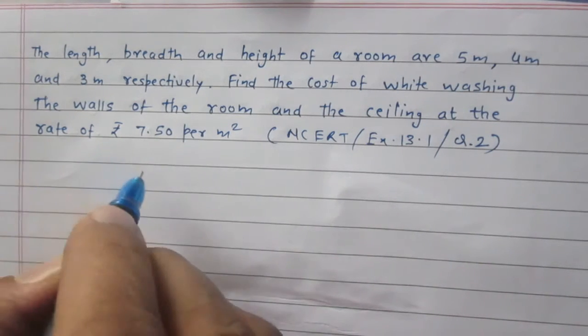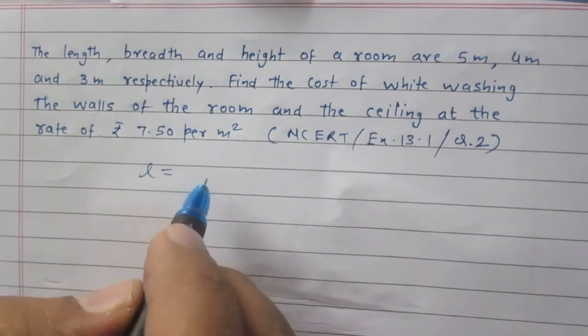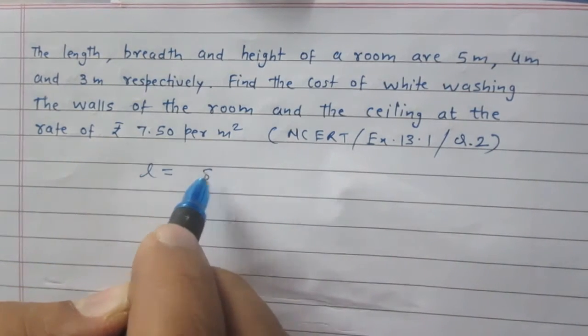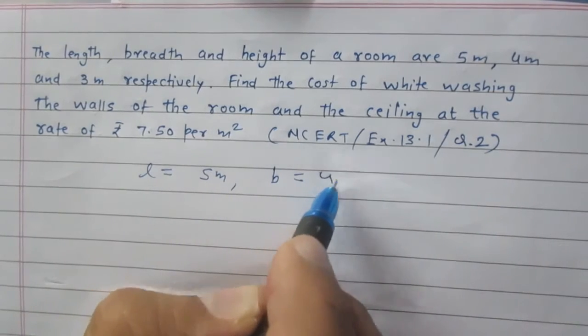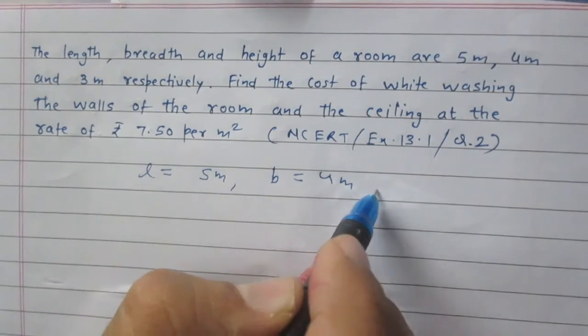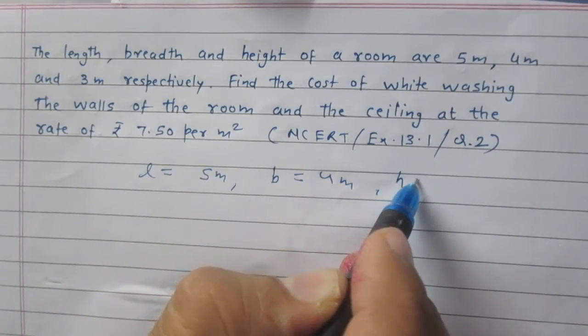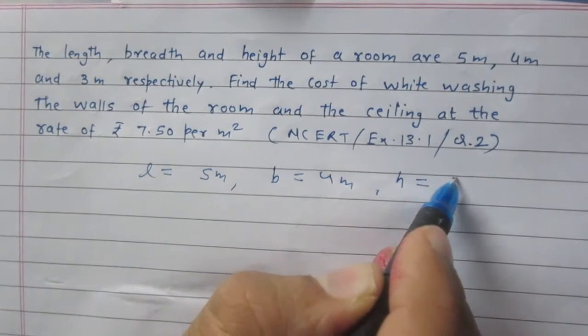Let us consider, L stands for the length of the room that is 5m, B stands for the breadth 4m and H is height that is 3m.